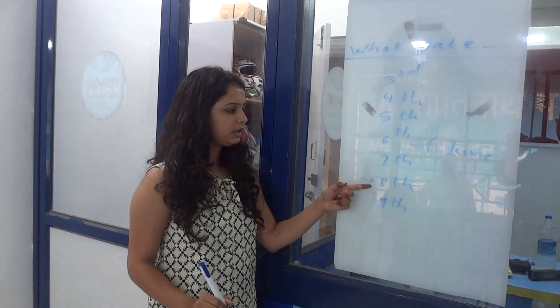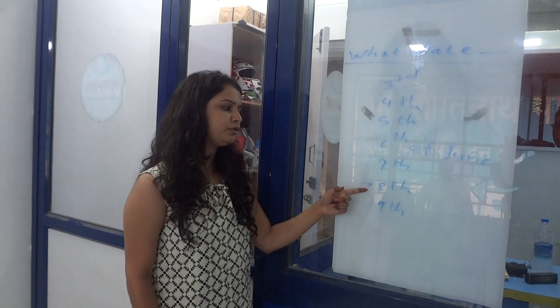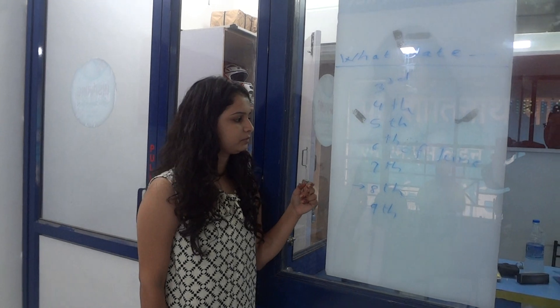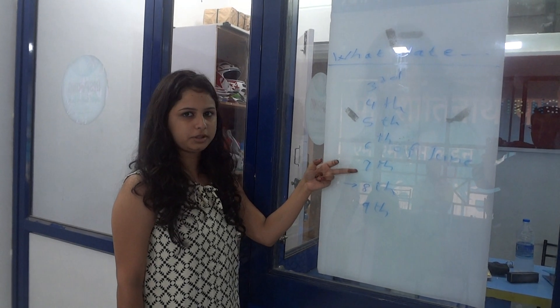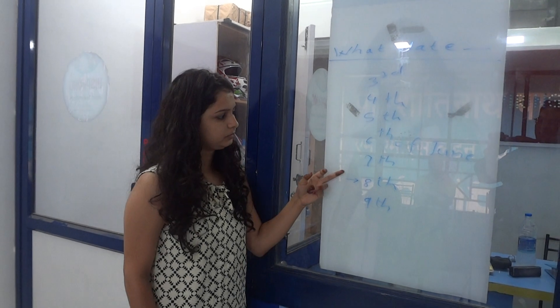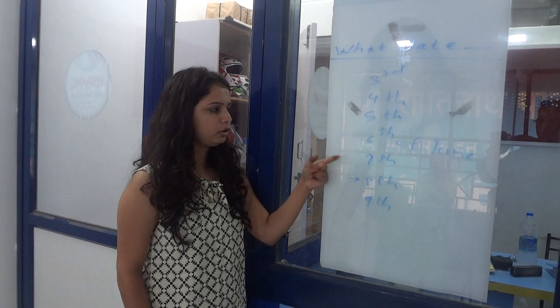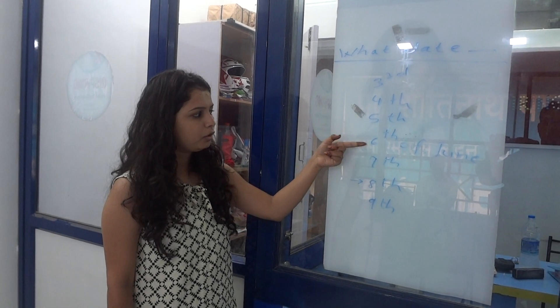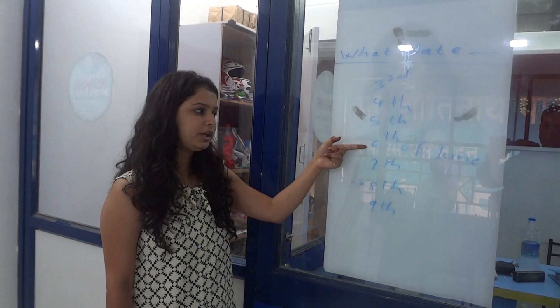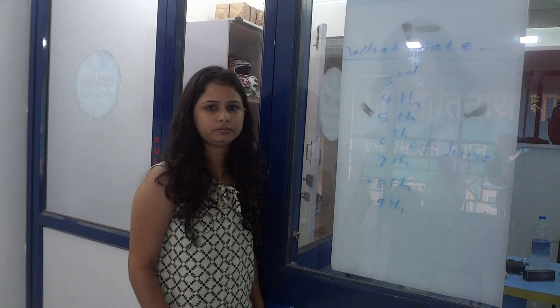What date is today? It is 8th of June today. What date was yesterday? It was 7th of June yesterday. What date was the day before yesterday? It was 6th of June the day before yesterday.